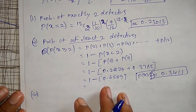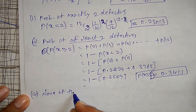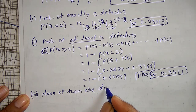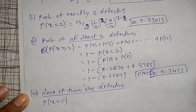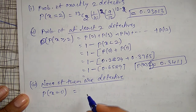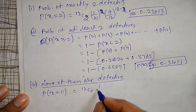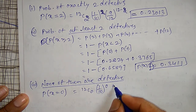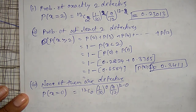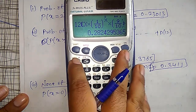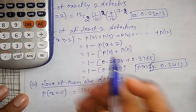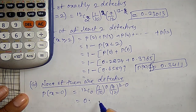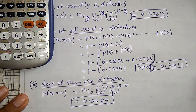The third case is none of them are defective, that is P(X = 0). This equals 12 C 0 multiplied by (1/10) raised to 0 multiplied by (9/10) raised to 12. Using the calculator, enter X equal to 0 and press equals; the answer is 0.2824. So the probability that none of the pens are defective is 0.2824.